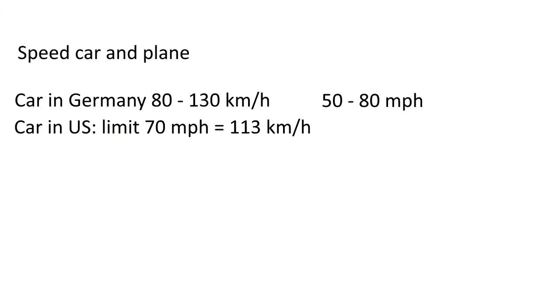How fast is a car? On German motorway, it may be 80 to 130 kilometers an hour, that's 50 to 80 miles per hour, or maybe faster. On American highways, however, there is a limit of 70 miles per hour, or 113 kilometers an hour. Therefore, I will set a speed of 100 kilometers an hour, or 60 miles per hour, hereafter.